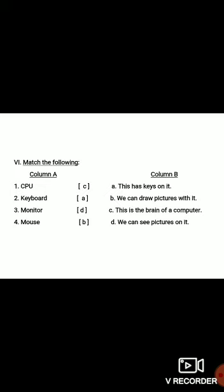See number 1: Match the following. Column A and Column B. In column A, 4 options are there: CPU, Keyboard, Monitor, Mouse. And in column B: A - this has keys on it, B - we can draw pictures with it, C - this is the brain of the computer, D - we can see pictures on it. Now we will match column A with column B.